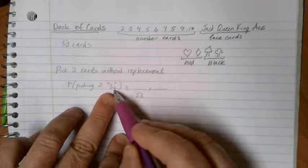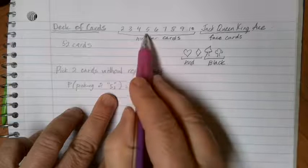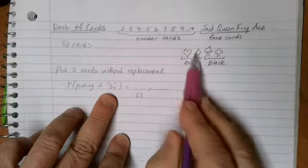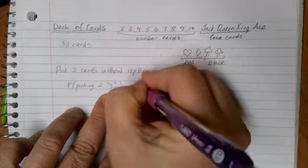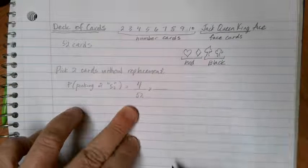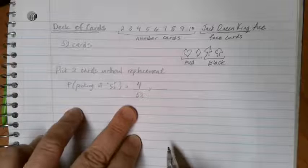Well, how many fives are there in the 52 cards? There's a five of hearts, a five of diamonds, a five of spades, and a five of clubs. So there's a total of four different fives in the deck of 52 cards.